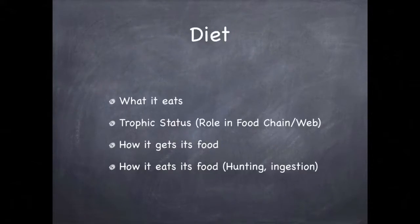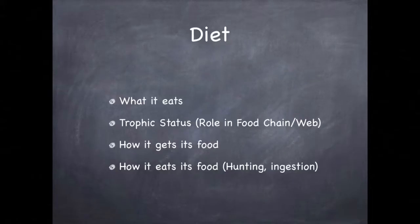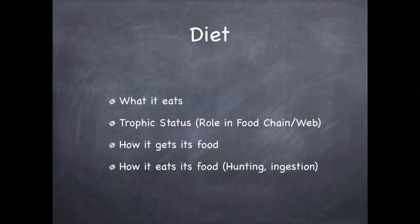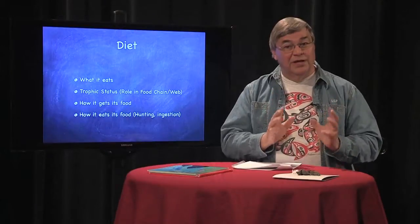When we talk about an animal's diet, we want to include what the animal eats. However, we want to go beyond that information to where the animal stands in the trophic world — in other words, the role it has in the food chain and in a similar concept called food webs. We want to learn how the animal gets its food and what it does with its food once it gets it. That's what we're going to explore in this episode.